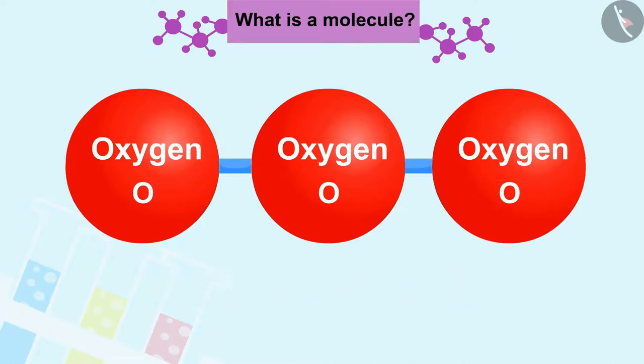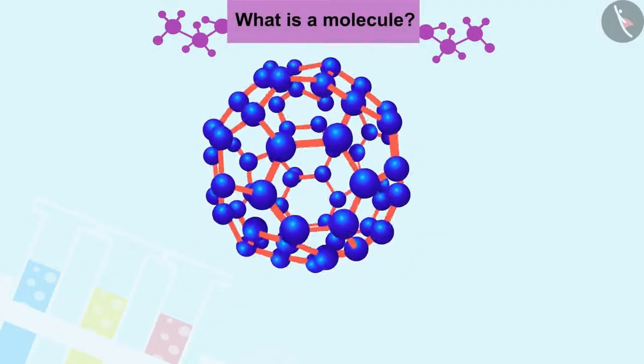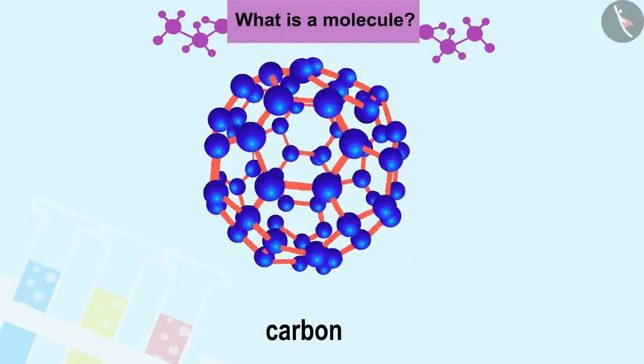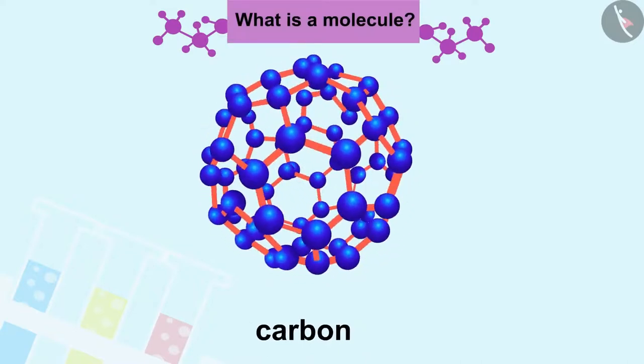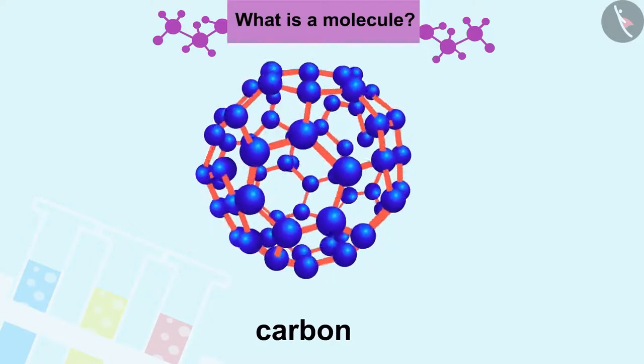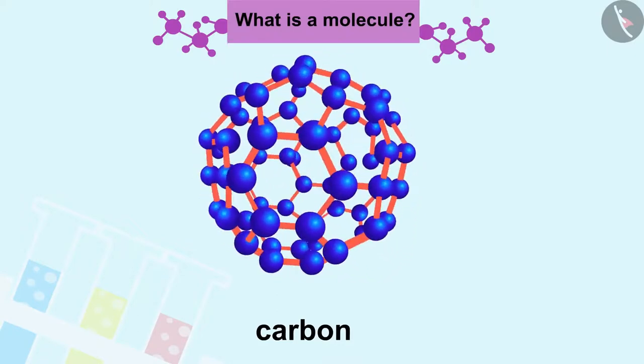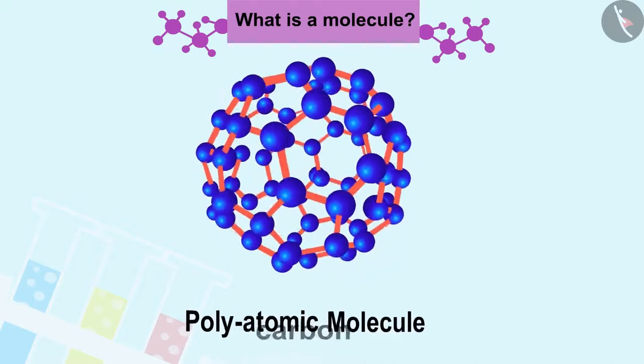Molecules of metals and some other elements such as carbon do not have a simple structure. They consist of a very large and indefinite number of atoms bonded together. Hence they are called polyatomic molecules.